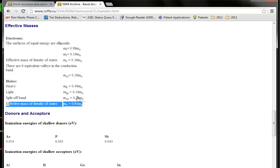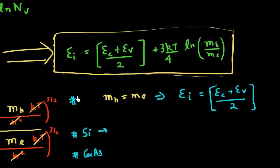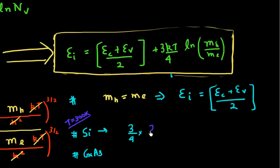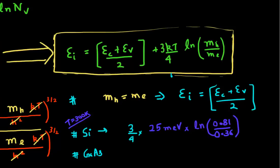So let me evaluate this formula. What I need to evaluate is this term, which is essentially (3/4) × KT × ln(m_h*/m_e*). At a temperature of 300 Kelvin, KT is roughly equivalent to 25 milli-electron volts. Then I take the natural log of the hole effective mass, 0.81, divided by the electron density of state effective mass, 0.36.